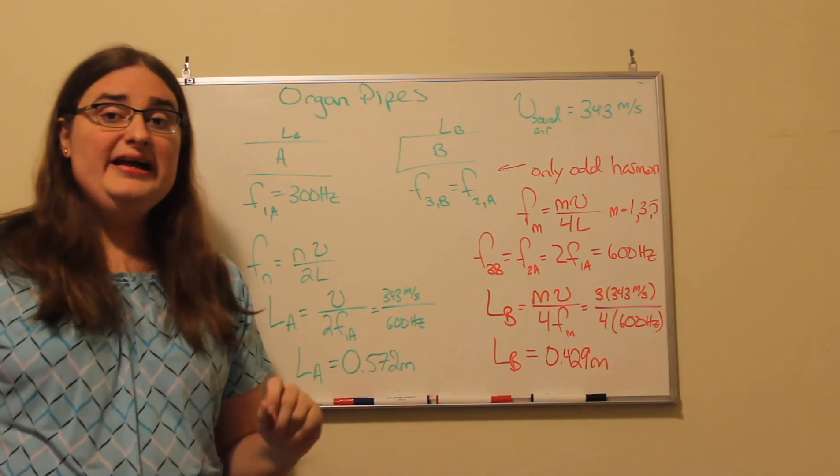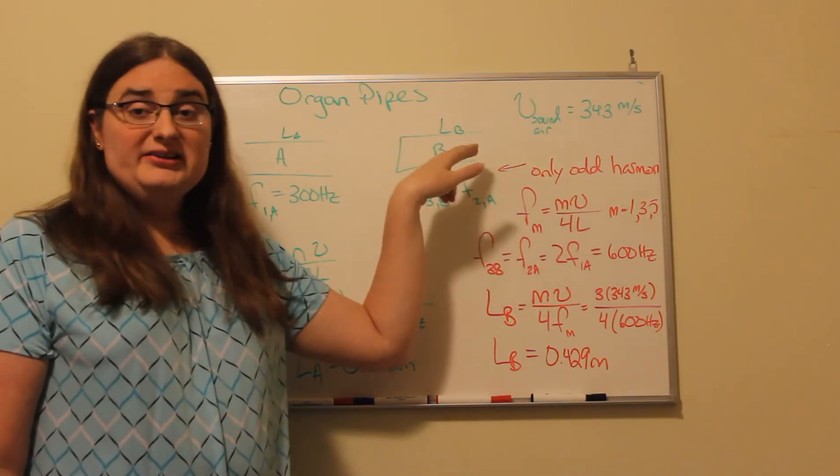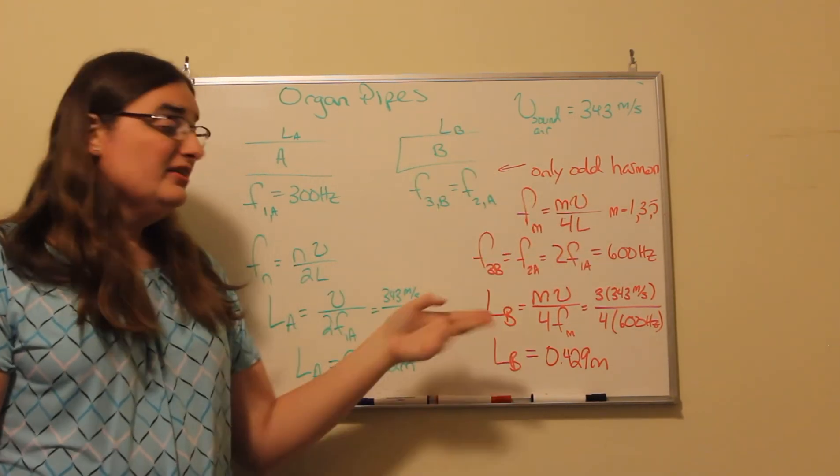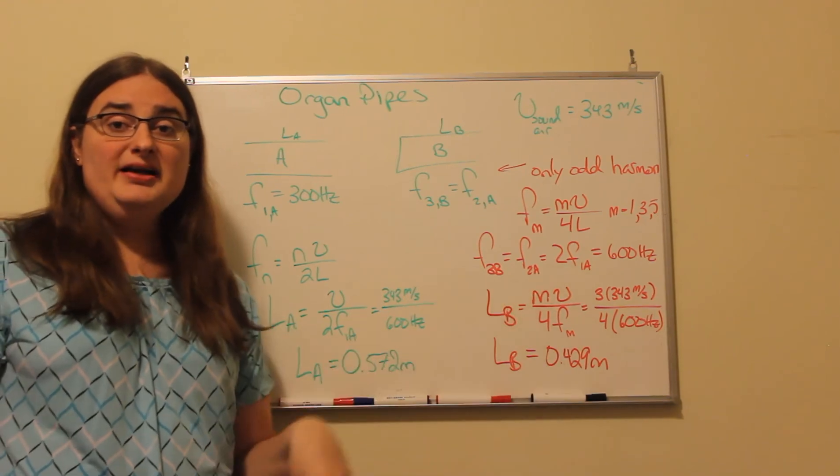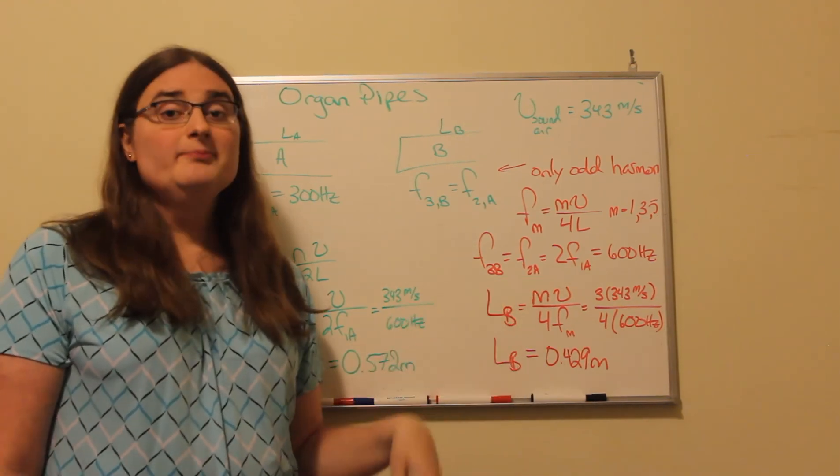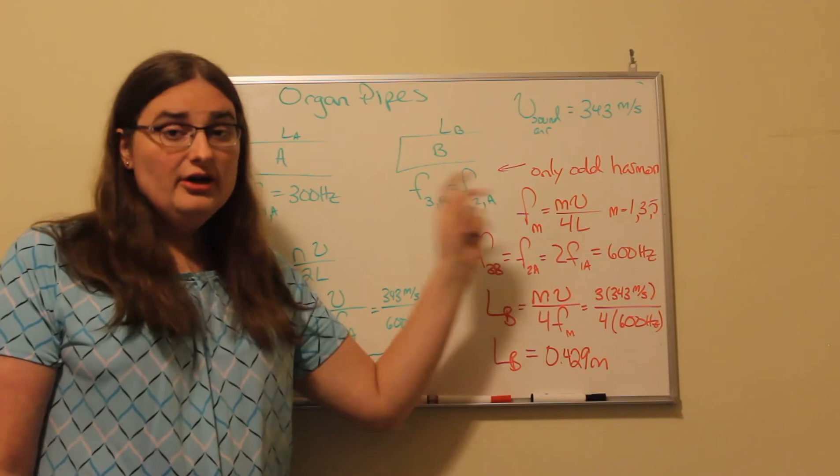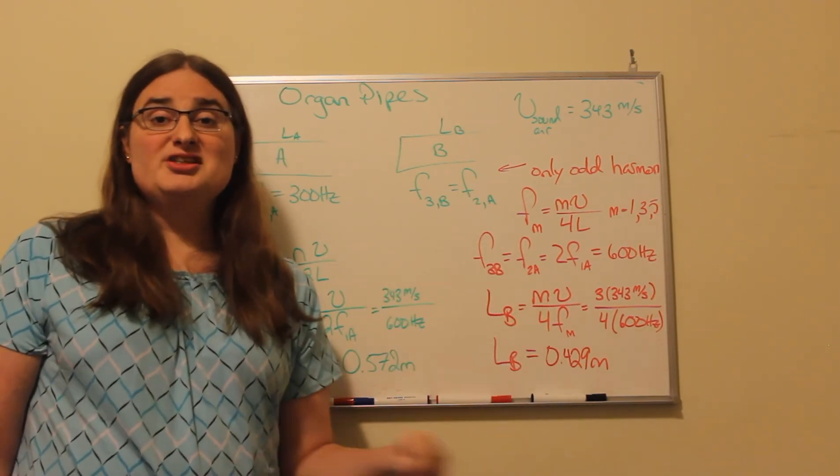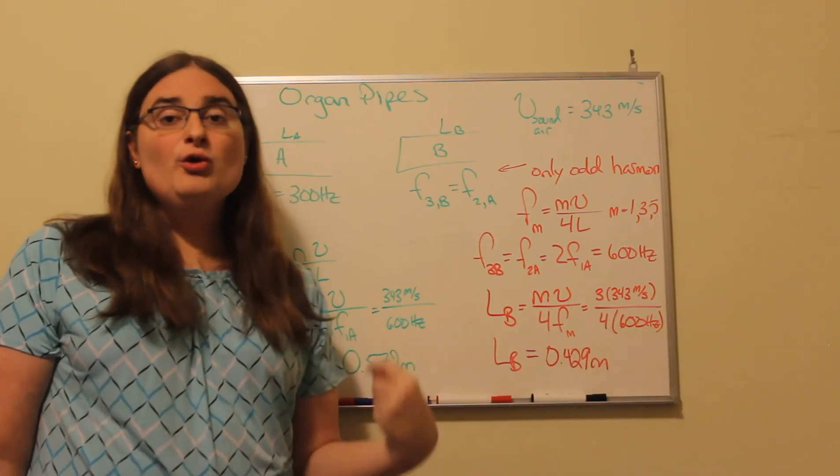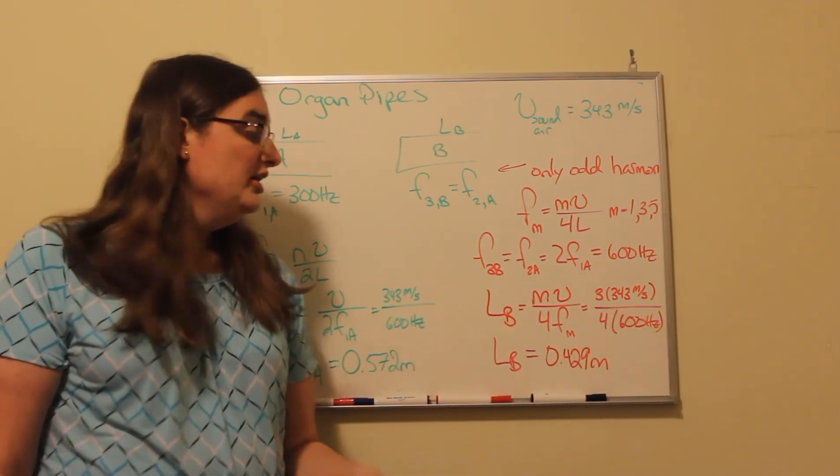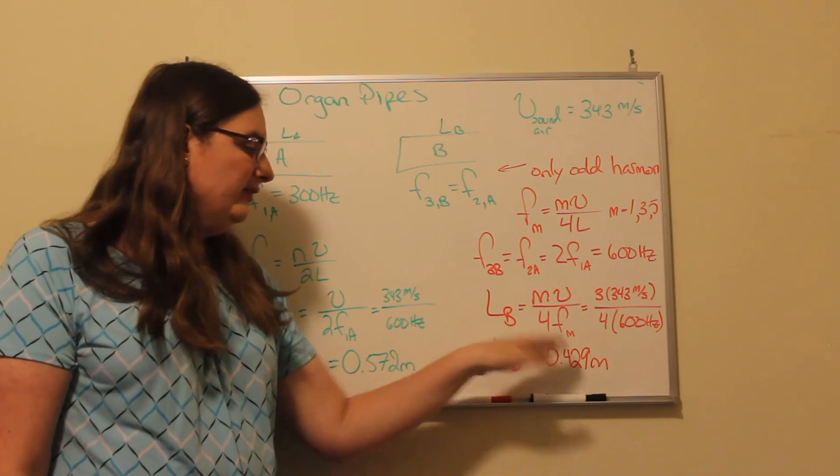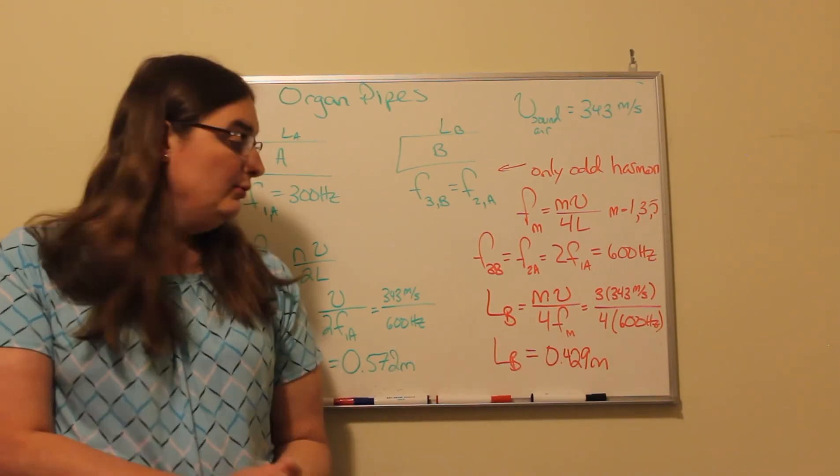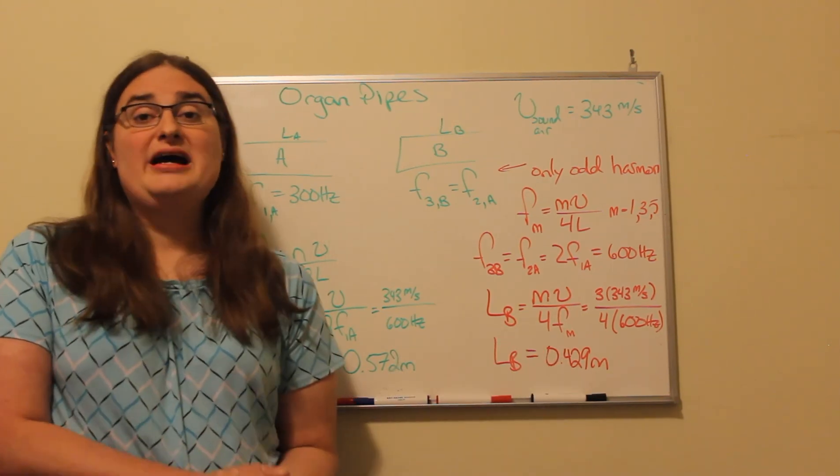Now, to solve for our length, again, multiply by length, divide by frequency. The length of our pipe is our harmonic number, which here is three, times the speed of sound, 343 meters per second still, divided by four times the frequency we're looking at. So we'd have four times 600 Hertz. So if I calculate everything out, I get a length of the pipe equal to 0.429 meters.